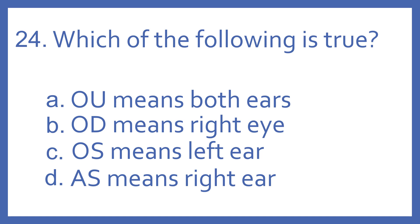Number 24. Which of the following is true? A. OU means both ears. B. OD means right eye. C. OS means left ear. Or D. AS means right ear.